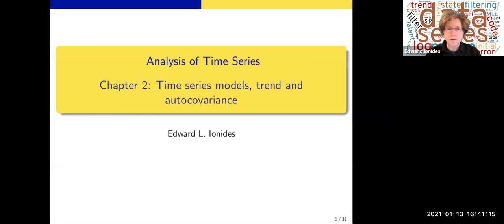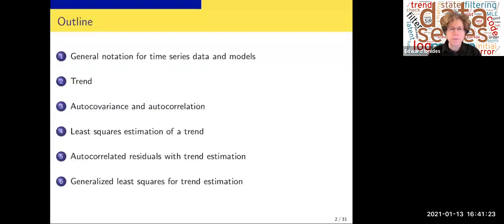This is part one of chapter two of Analysis of Time Series on time series models, trend, and autocovariance. In this segment we're going to introduce some general notation for time series data and models, discuss estimation of trend, a very fundamental time series problem, and revisit autocovariance and autocorrelation with a little more detail than in chapter one.